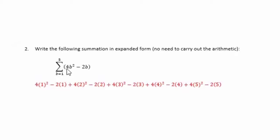So we're just going to take this expression 4b² - 2b, which you can see is going to happen 1, 2, 3, 4, 5 times.